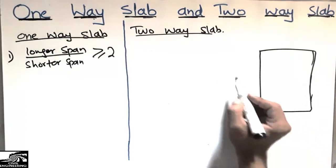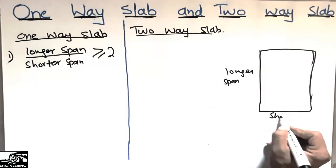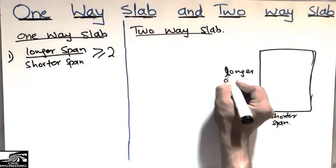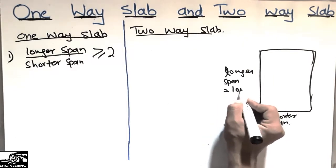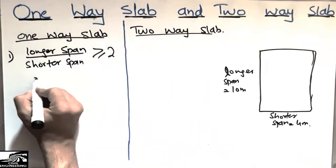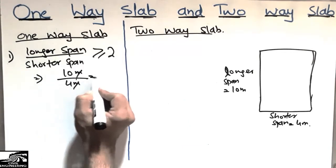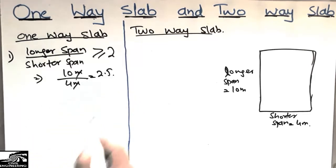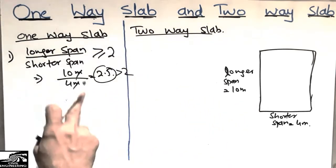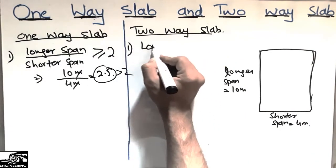Here is the longer span of the slab and here is the shorter span of the slab. If the longer span is 10 meters and the shorter span is 4 meters, dividing 10 by 4 we get 2.5, which is greater than 2. So this type of slab is categorized as a one-way slab.